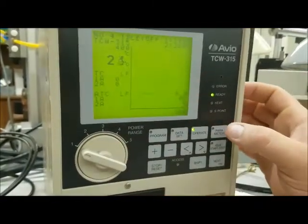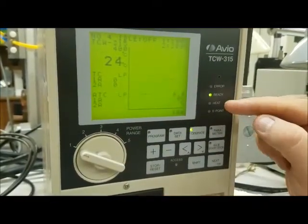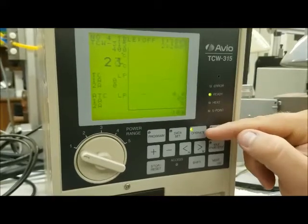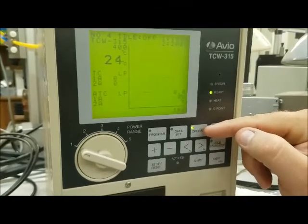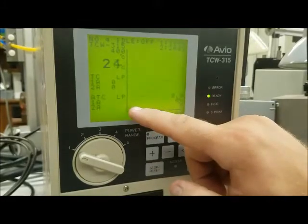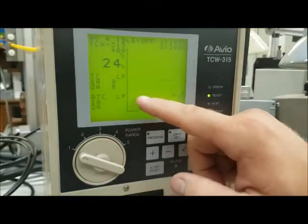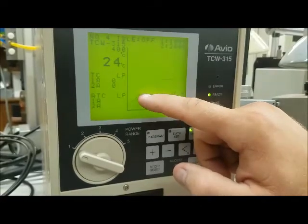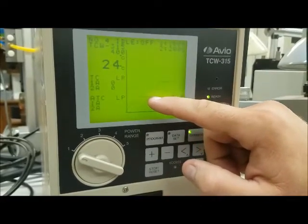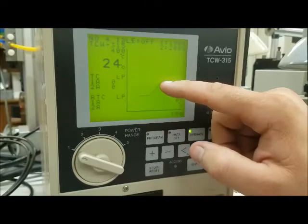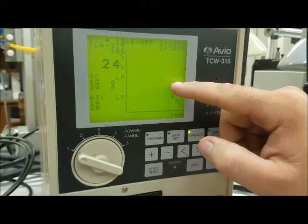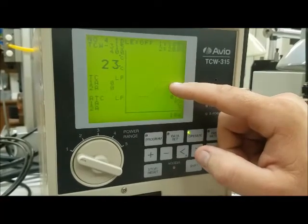Right now the power supply is in operate mode with a ready light on, so it's ready to run the stored program. This graph shows how the program runs. There's a ramp period where the temperature is brought up to the first level and held for a period of time, then brought up to the next level and held. Most soldering profiles follow this.